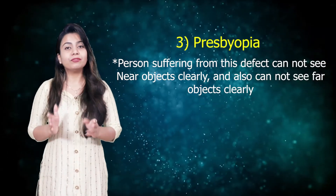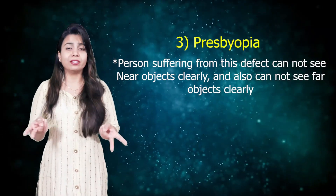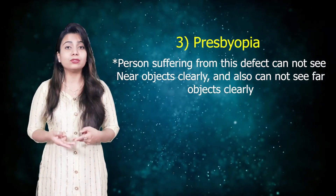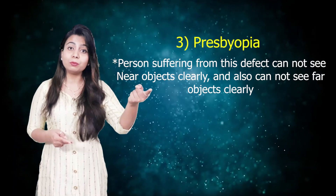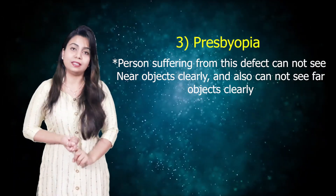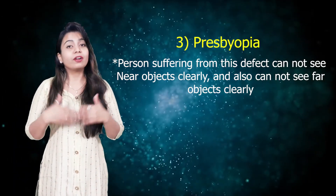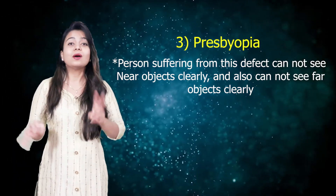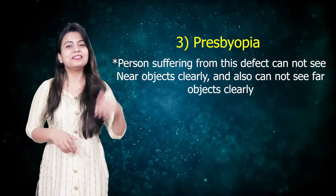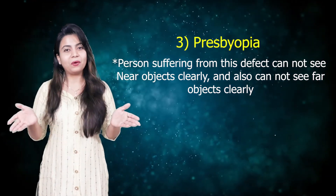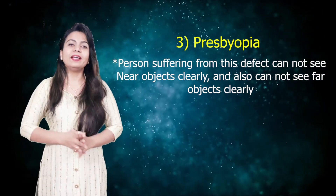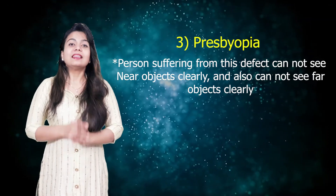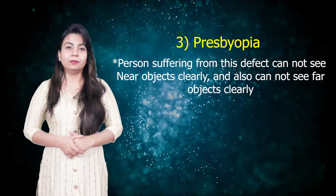Coming to the third one, that is presbyopia. In this case, a person is suffering from both defects — meaning he or she is not able to see far-off objects clearly as well as near objects clearly. For correction of this, both lenses are required — that is, convex and concave in your specs. These were the defects of vision.